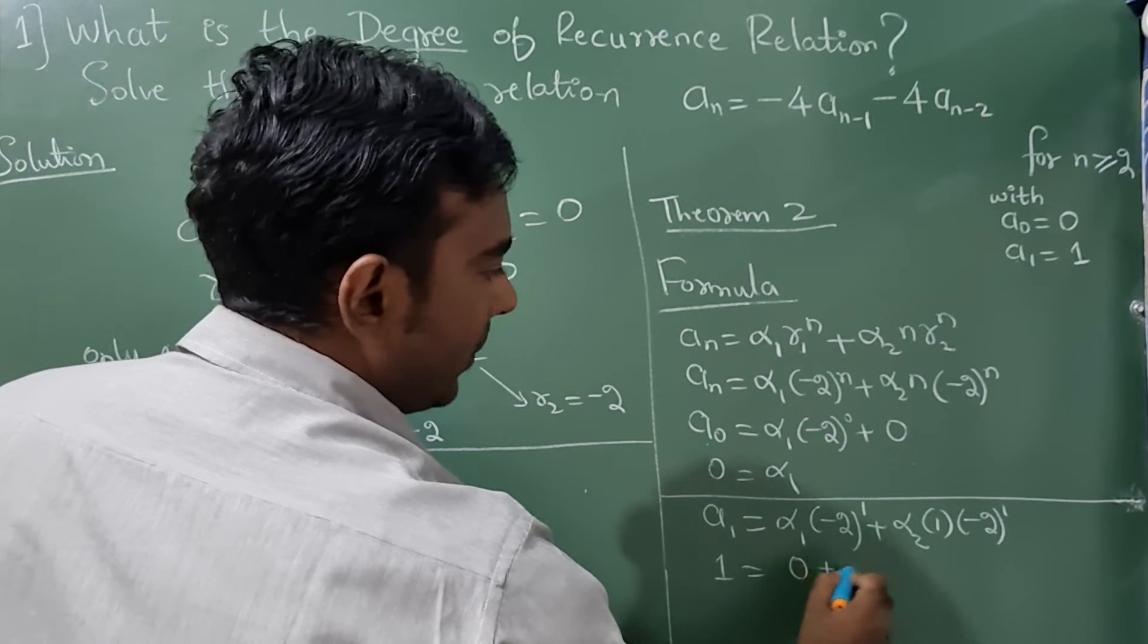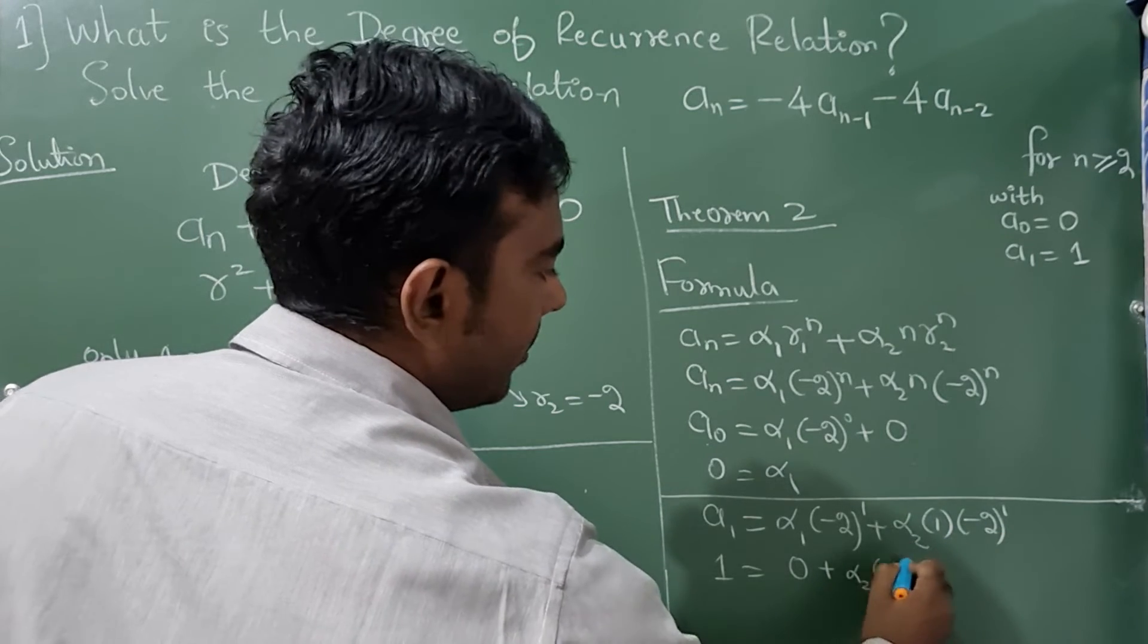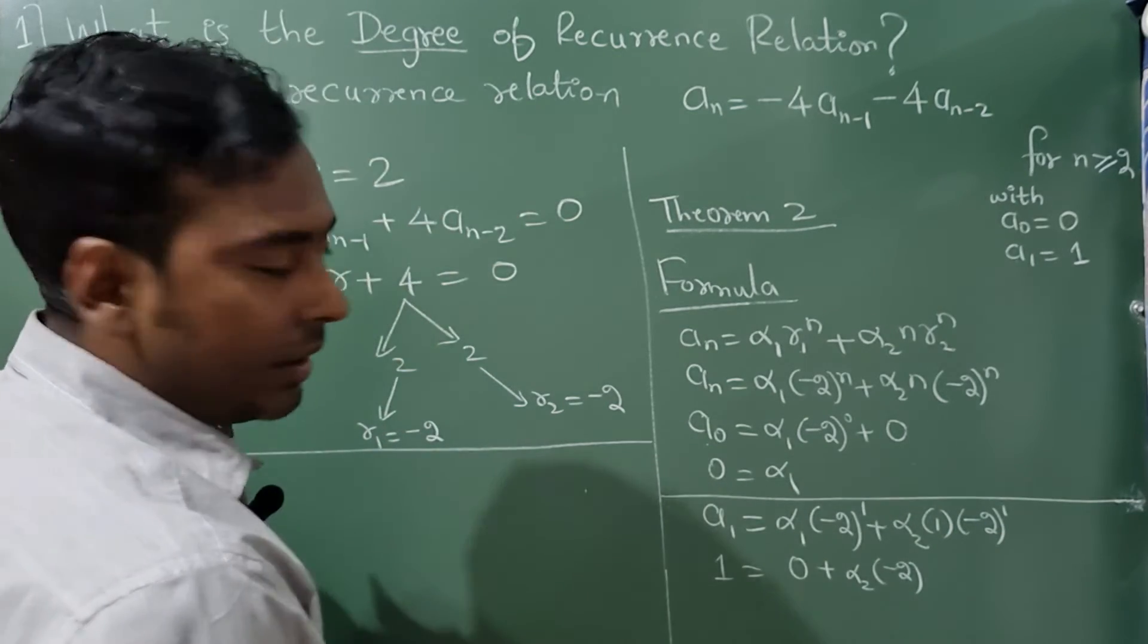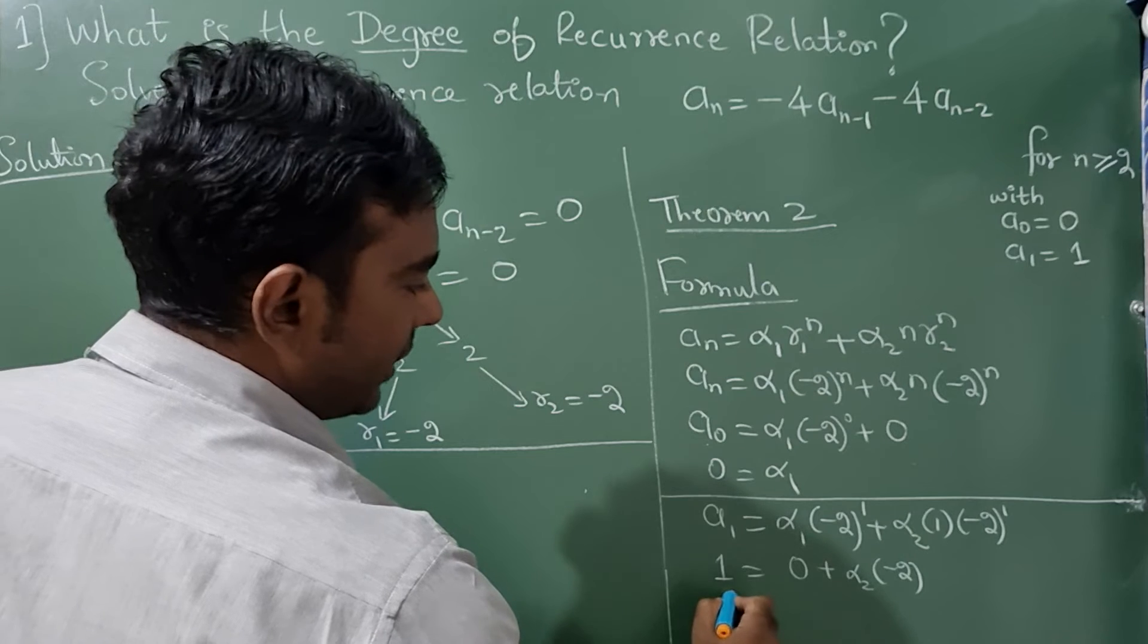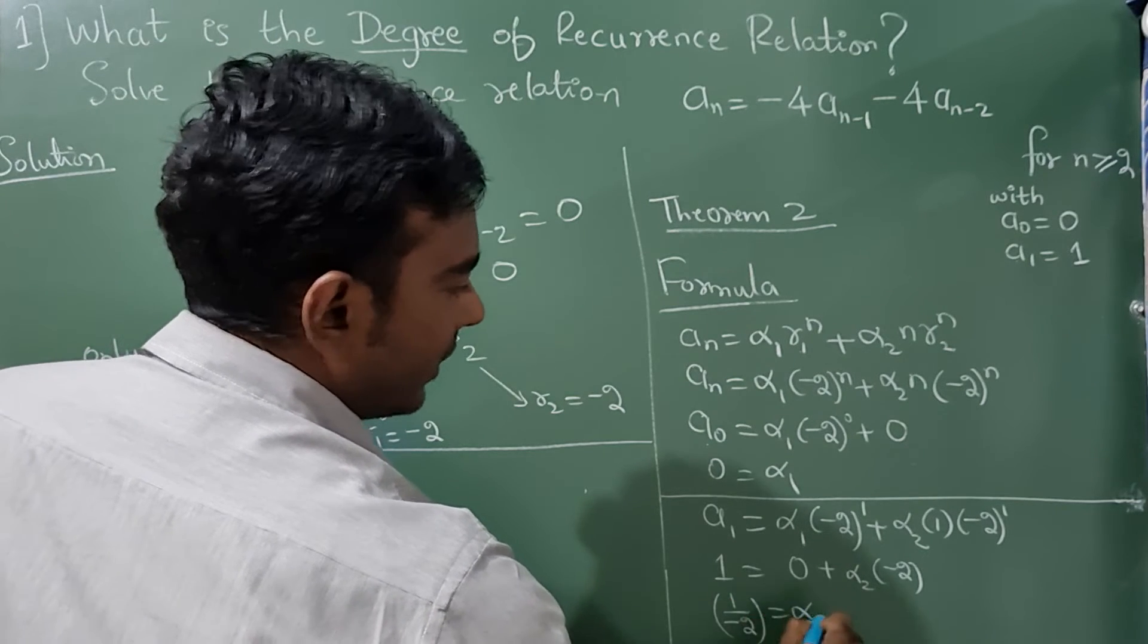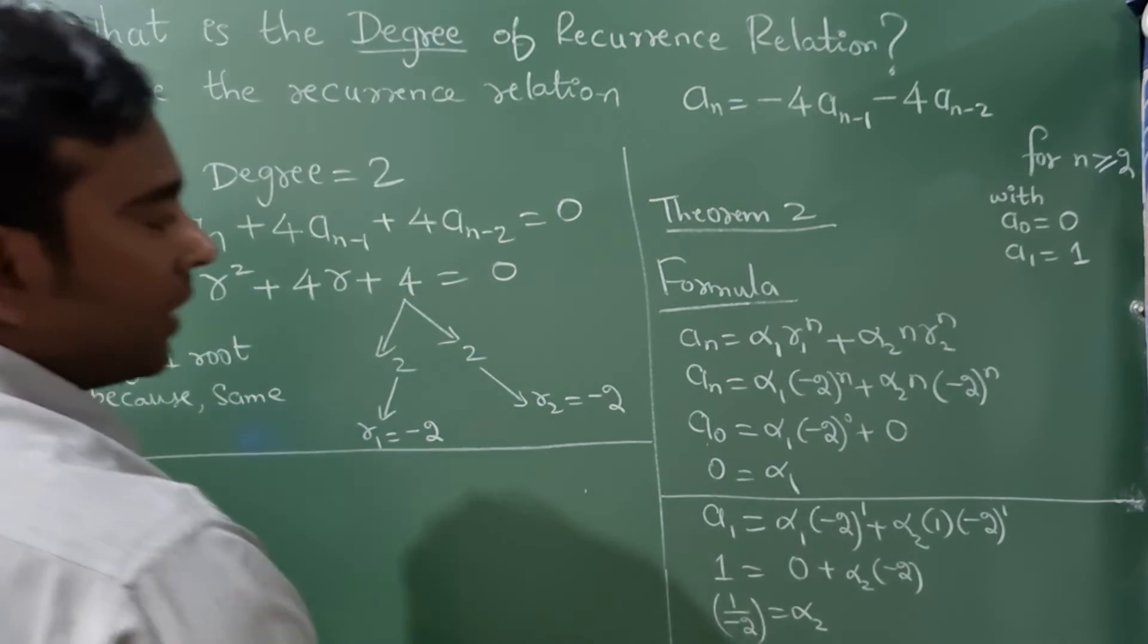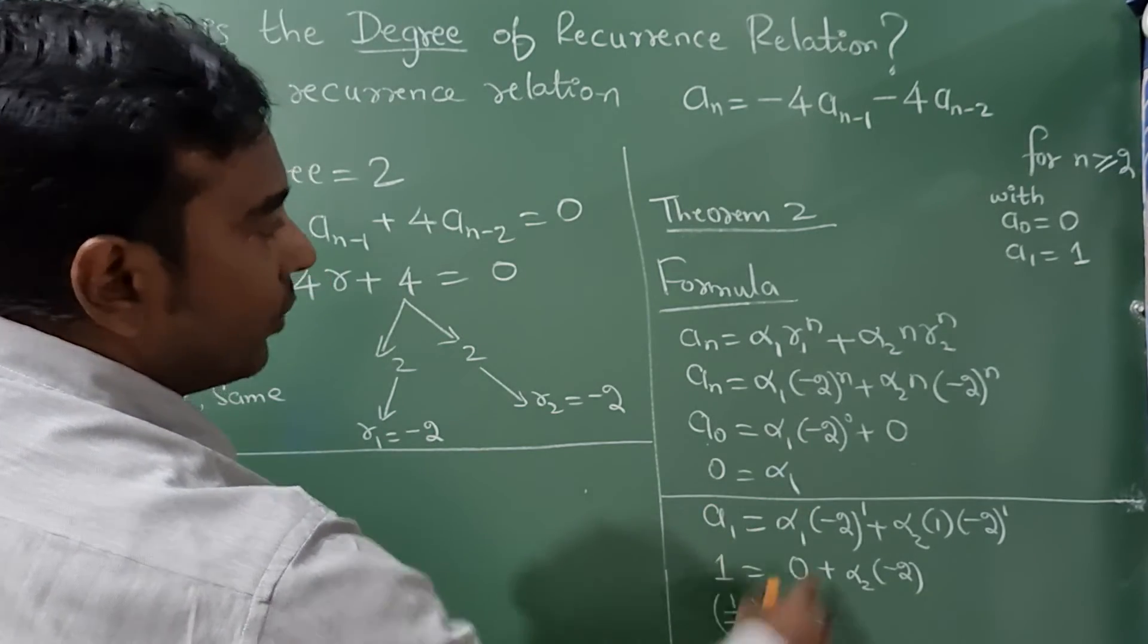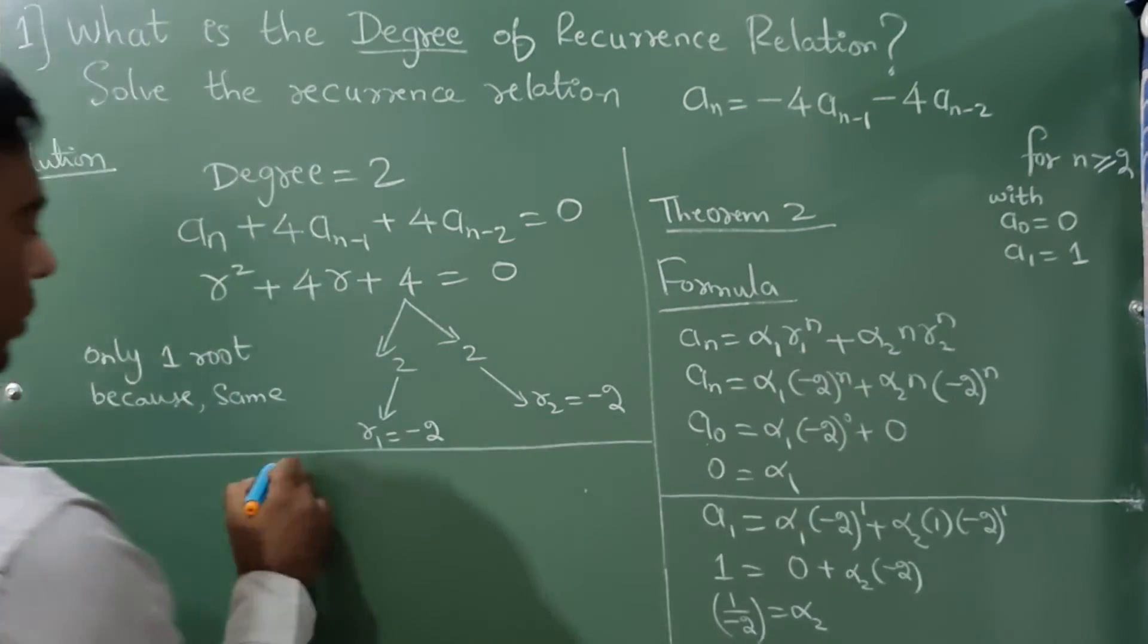α₁ value is 0 plus α₂ and here -2. Now this will come in denominator, so 1 upon -2, this is your α₂ value. Now substitute α₁ and α₂ value in the formula.